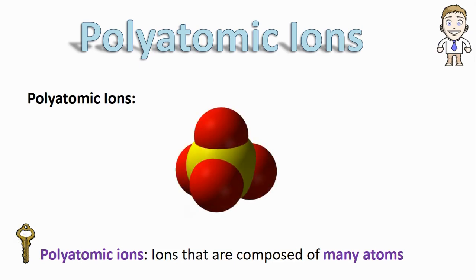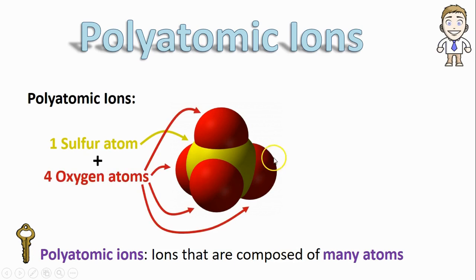Well, here's a good example of one. You can see there's a yellow sulfur atom in the middle, and it's surrounded and bound to four other oxygen atoms. That's the many atoms part. Together, all five of these atoms collectively act as one ion with a minus two charge.